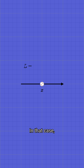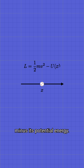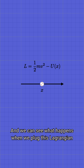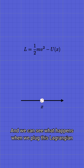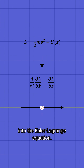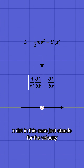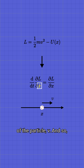In that case, the Lagrangian is just the kinetic energy of the particle minus its potential energy. And we can see what happens when we plug this Lagrangian into the Euler-Lagrange equation. Starting off with the left hand side, x-dot in this case just stands for the velocity of the particle, v.